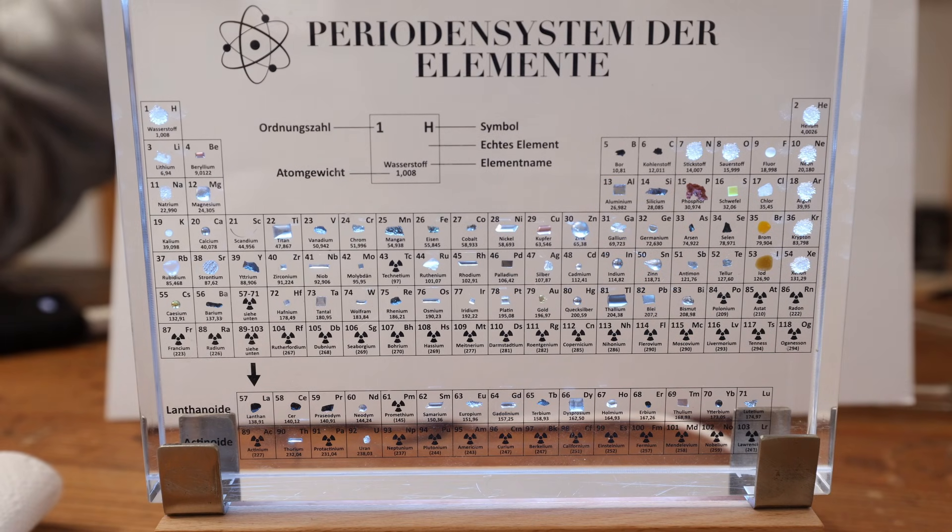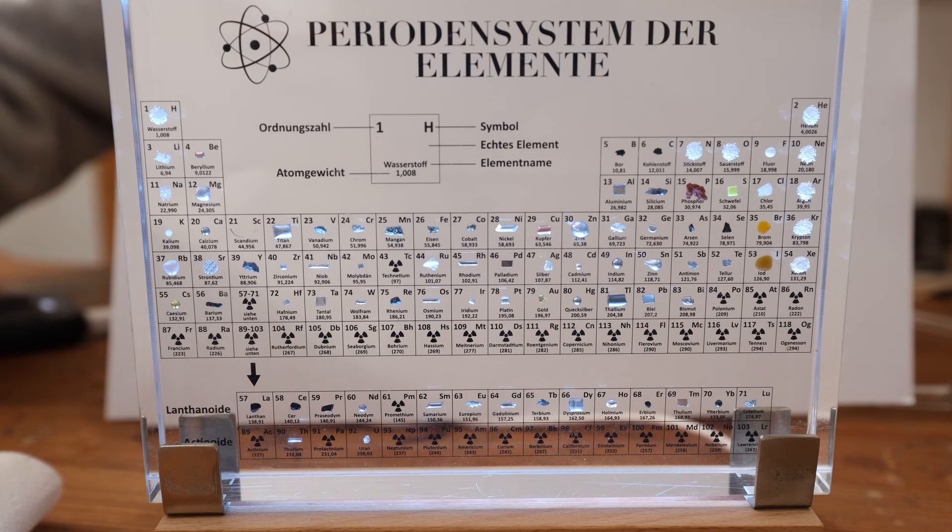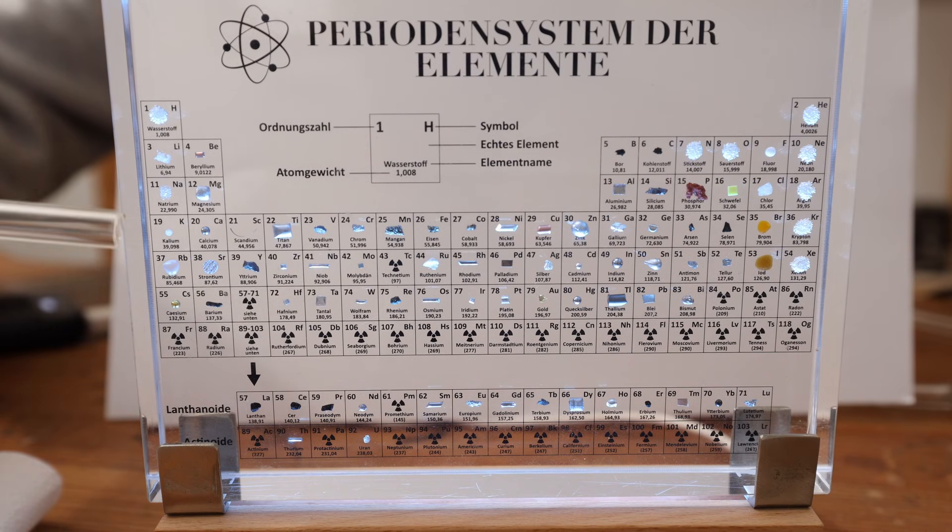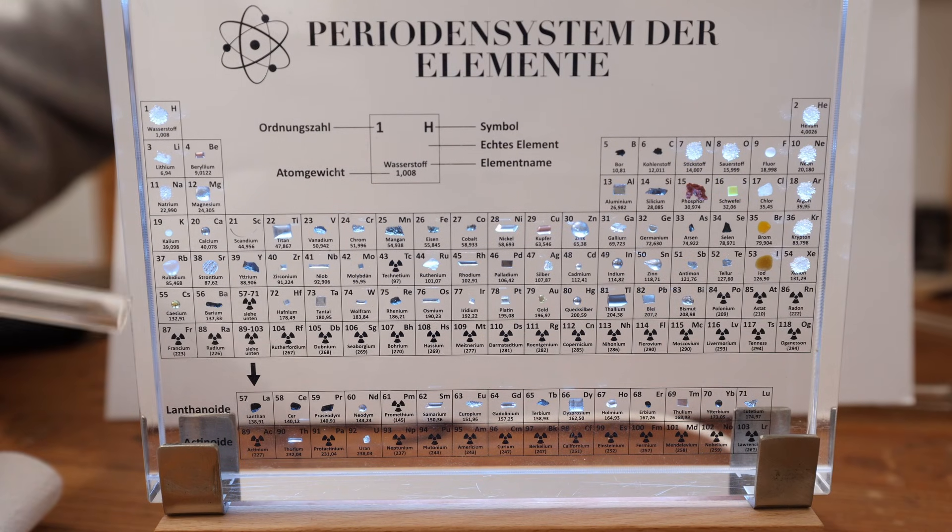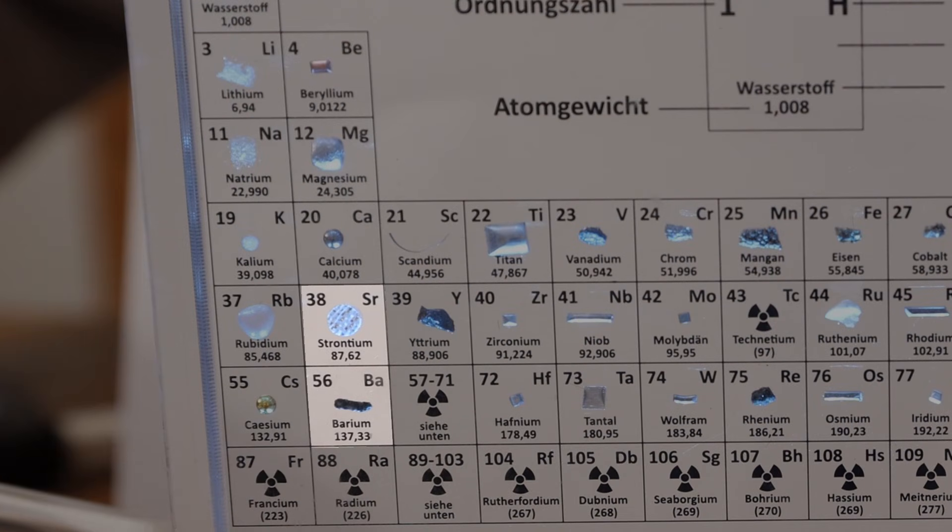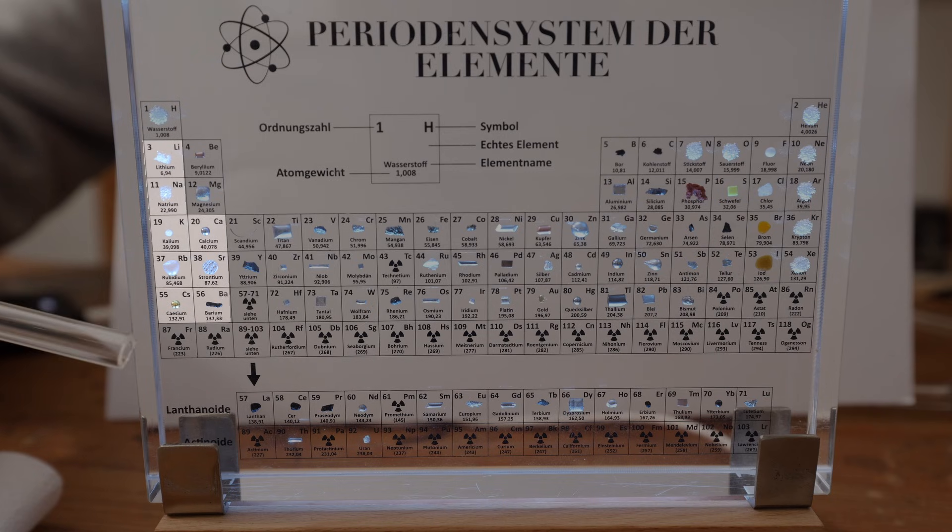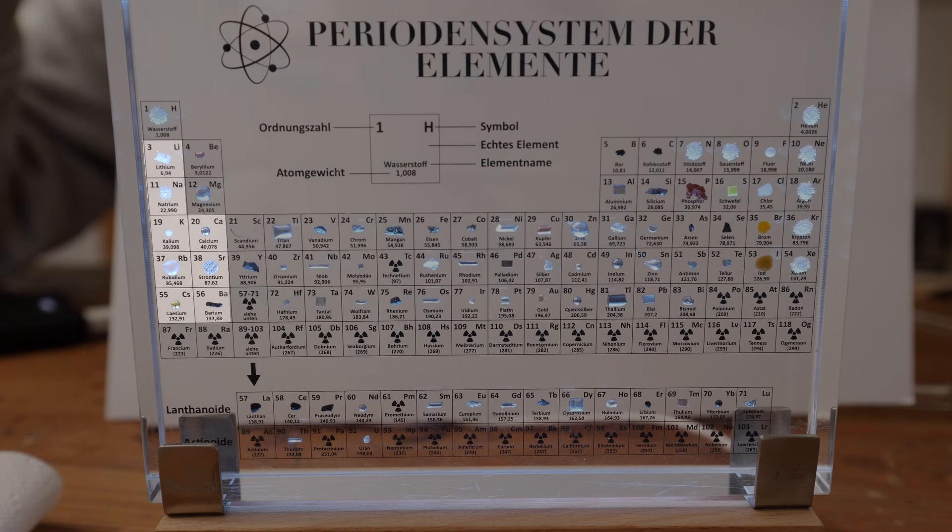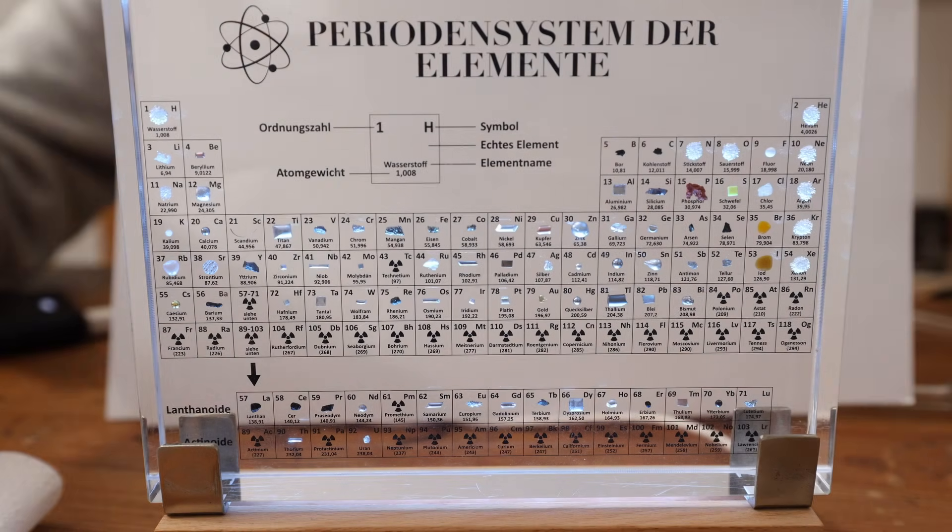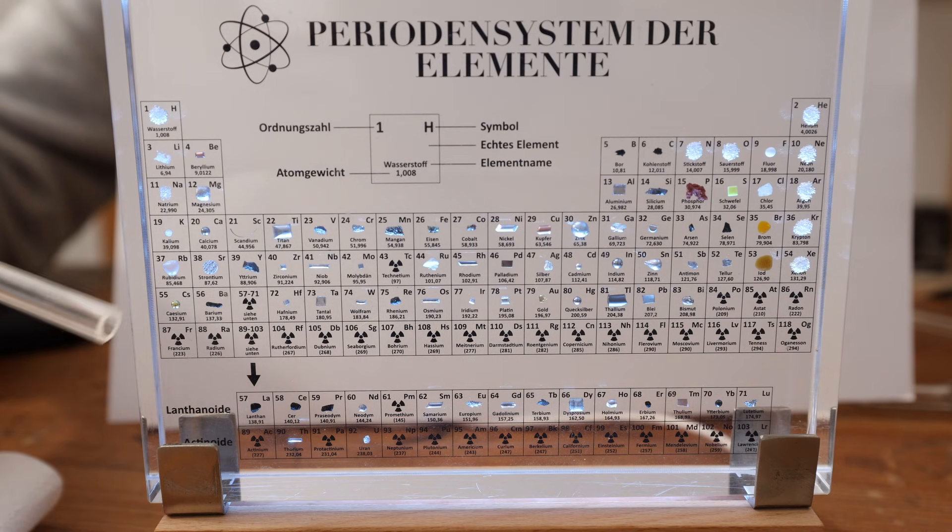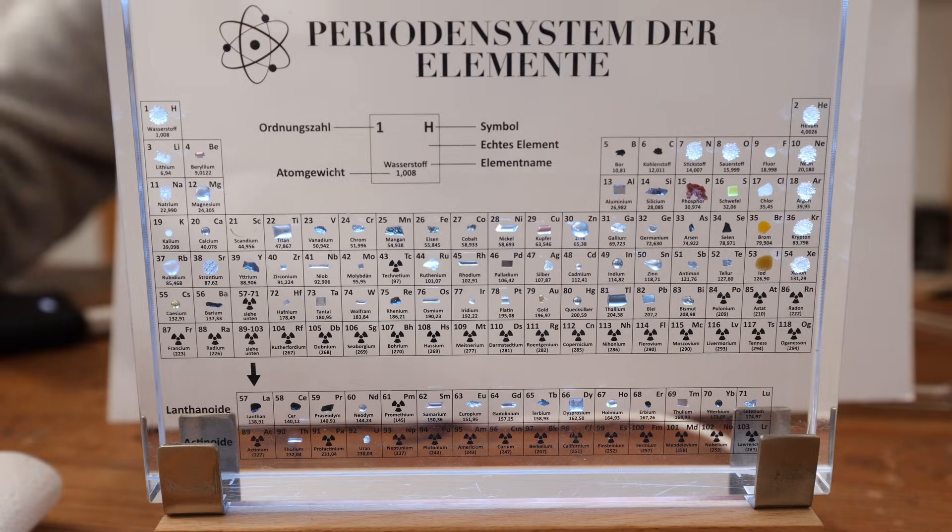Unfortunately there's a little bit of a problem. The elements with the lowest work function are actually right here. And this is for example strontium or barium. However these elements right here have a very low melting point. And they're also pretty reactive. So you can't make a filament out of it. And even if you would be able to the filament would burn out pretty quickly.